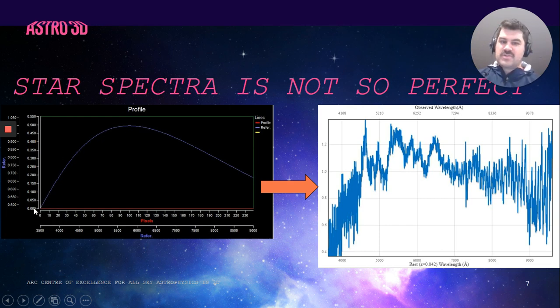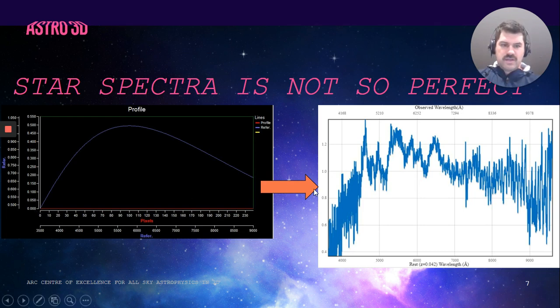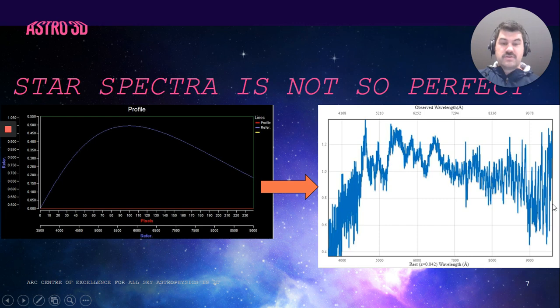But star spectra, as it says there, is not so perfect. We get these spectral plots that look a bit more like this. In this spectrograph, you've got lots of different absorption lines, and those absorption lines relate to the chemical elements that are present in that star.